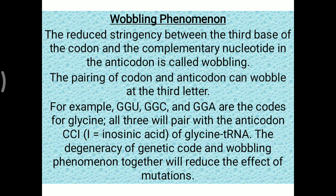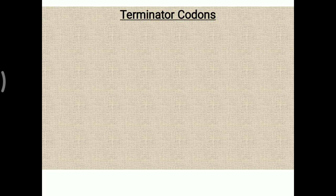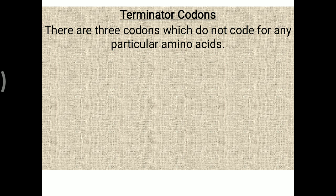All three codons — GGU, GGC, and GGA — pair with the anticodon CC-I (inosine at the third position) and all code for glycine tRNA. The degeneracy of the genetic codon and the wobbling phenomenon mean the third nitrogenous base can change without altering the amino acid added, which together reduces the effect of mutation.